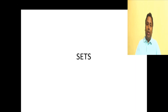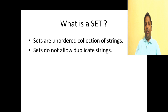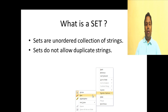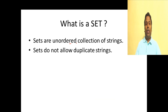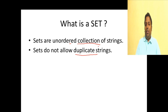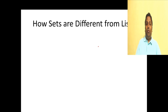In this session we'll be looking at sets, another very interesting concept in Redis. A set is nothing but a collection of strings, but it has two unique properties. Sets are unordered collections of strings - this is a very important thing that differentiates a set from a list. And sets do not allow duplicate strings, whereas in a list you can have duplicate strings.